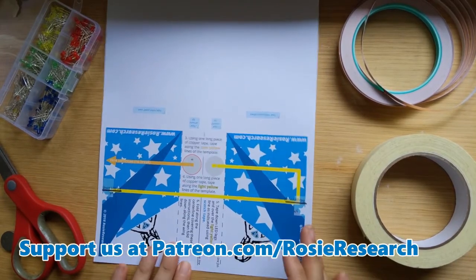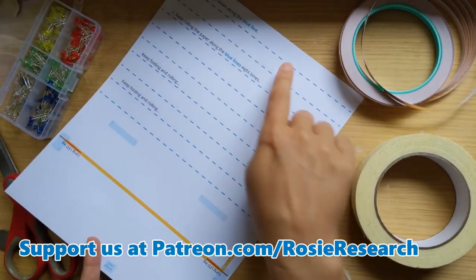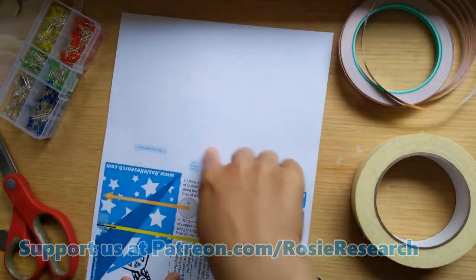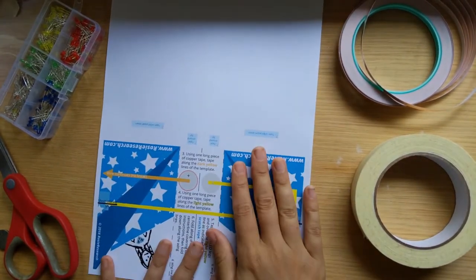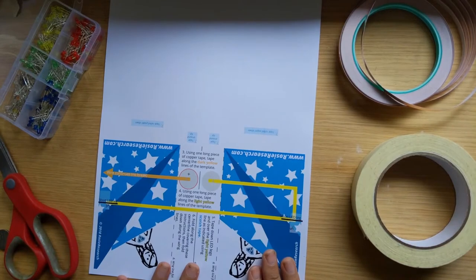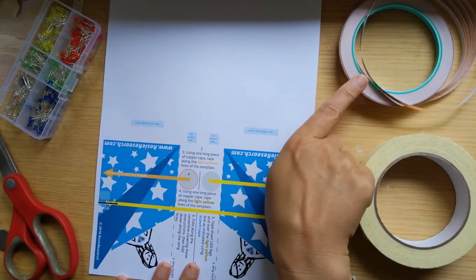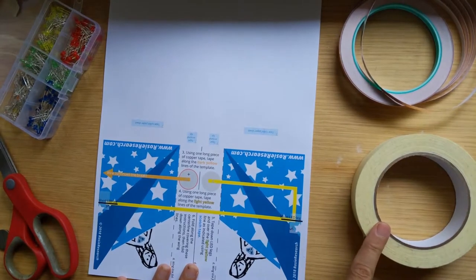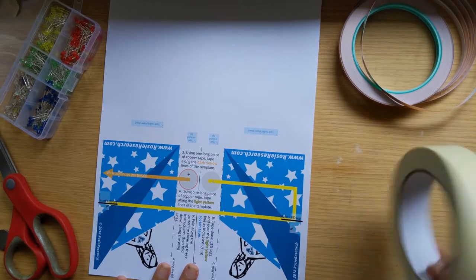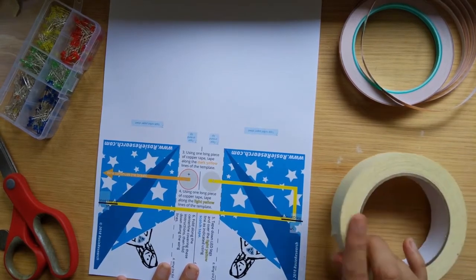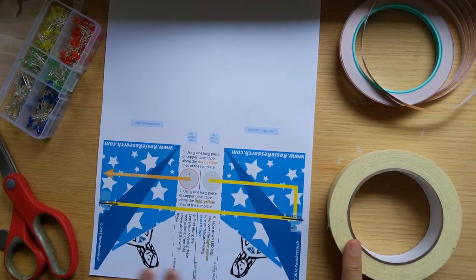So for this project, you're going to need our printout and you need to print it double-sided. These parts up here with the lines should be in the blank spot up here. You can go to patreon.com/rosieresearch or online at rosieresearch.com. You need your conductive tape and a non-conducting tape, that could be scotch tape or masking tape. I suggest the clear scotch tape if you are working on your own. I have the masking tape so it's a little easier for you guys to see where I'm putting my tape.